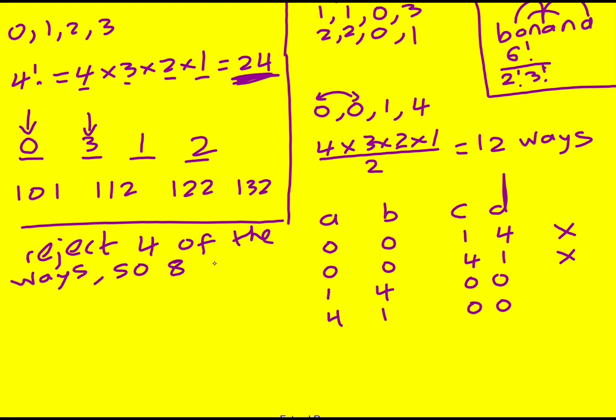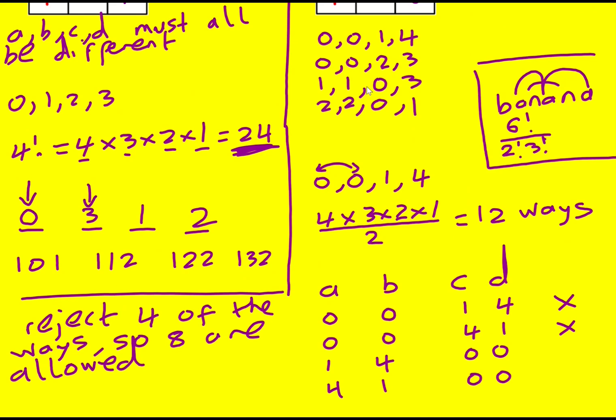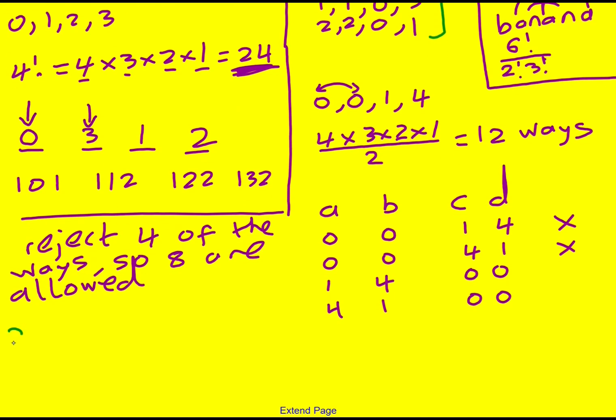So 8 are allowed. Now remember, that was just for my 0 0 1 4. I've got 4 ways to do this. And so overall, we have 4 times 8 equals 32 arrangements.